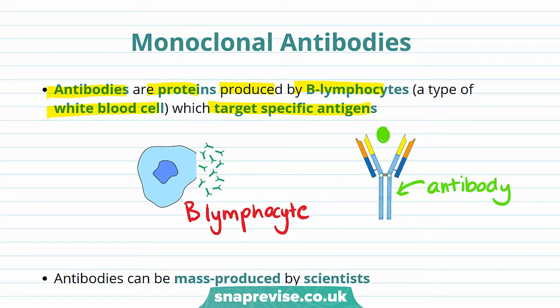These antigens can be anything that antibodies bind to, for example hormones or other chemicals that the cell makes. They can also bind to cell markers on pathogens to help destroy them.